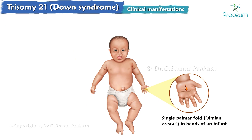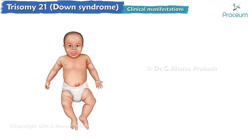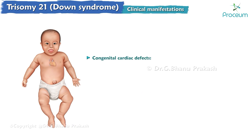Brushfield spots — white or dark colored spots seen on the anterior surface of the iris — are also indicative of Down syndrome. The following congenital cardiac defects are most frequent in patients with Down syndrome.